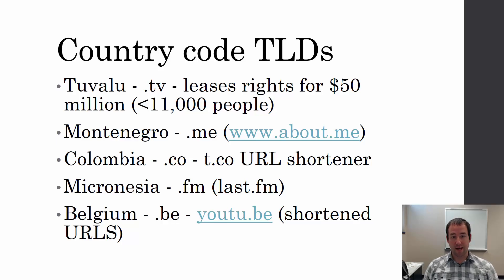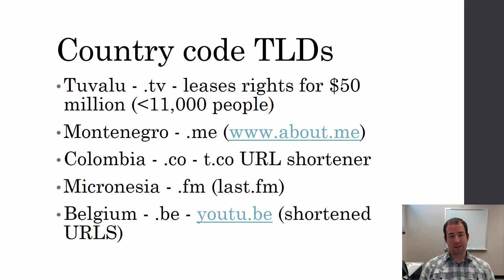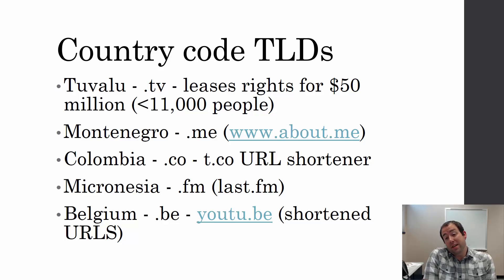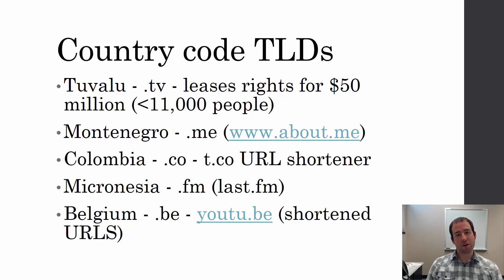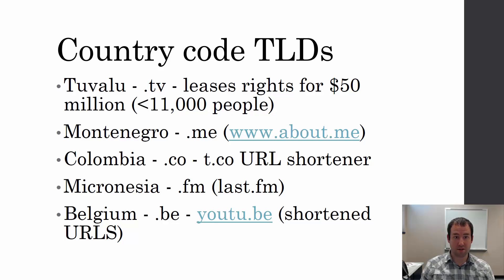They decided to lease the rights for .tv for $50 million. So this little country of less than 11,000 people gets $50 million just because they won the country code top-level domain lottery and got .tv, which is very popular for television stations.